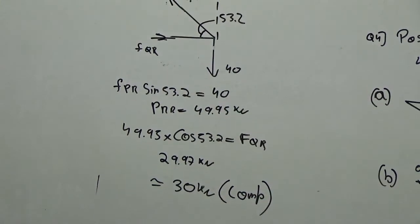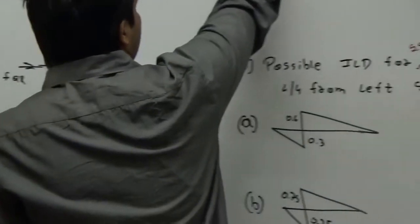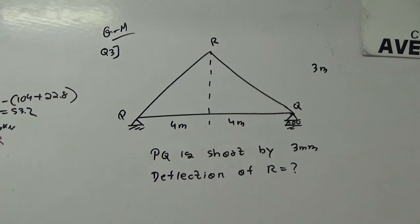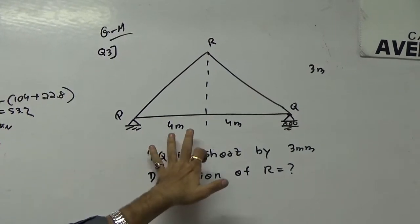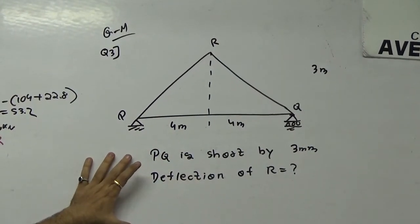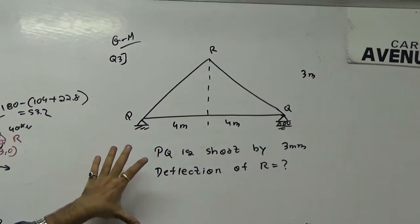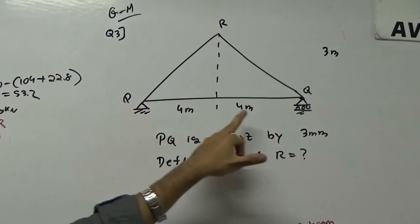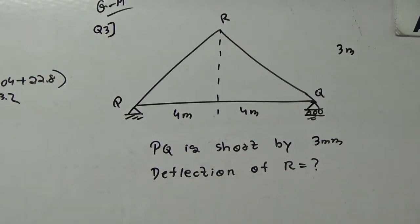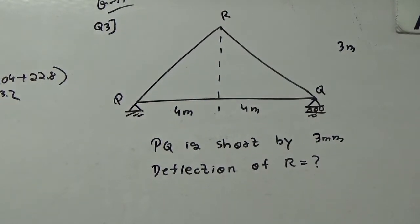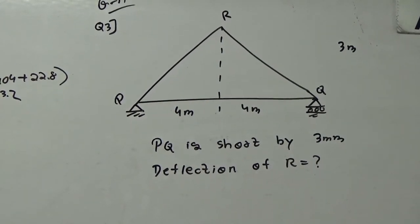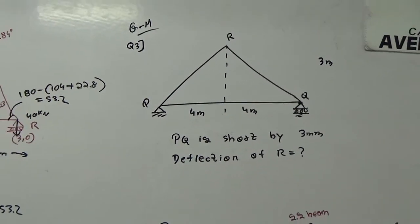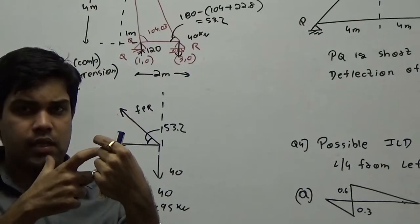The next problem was again on trusses where this time it was a 2 marks problem. So, if it is a 2 marks problem, you expect it to be a bit more complicated. In this, it was given that QR, this concept was not introduced in the video series, but I am telling it here in detail of this problem, in reference to this problem. So, in this truss, it was given that the PQ member is short by 3 mm. Now, what is this too short, too long is actually when you see some members being transported to the site and there may be 1 or 2 mm difference in the fitting location and the member size.